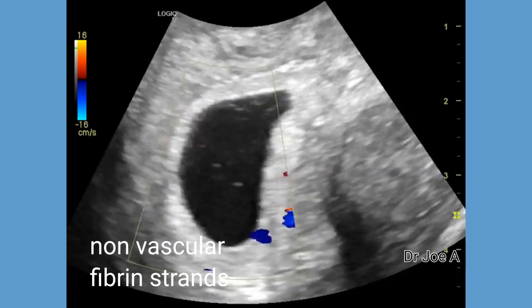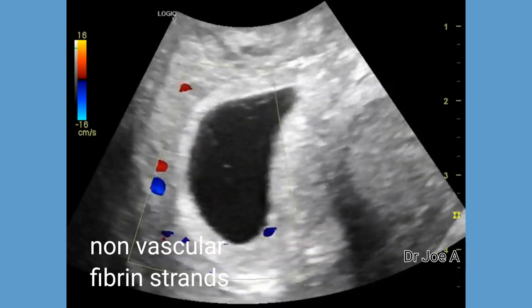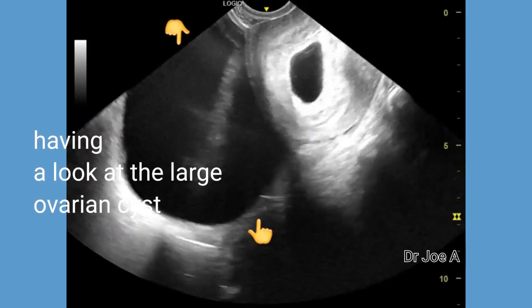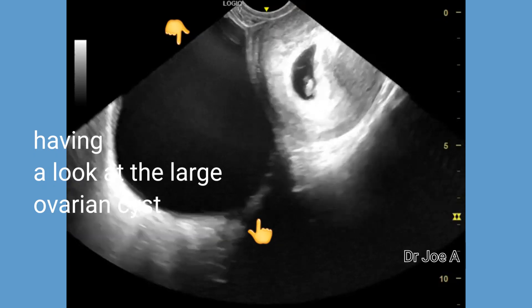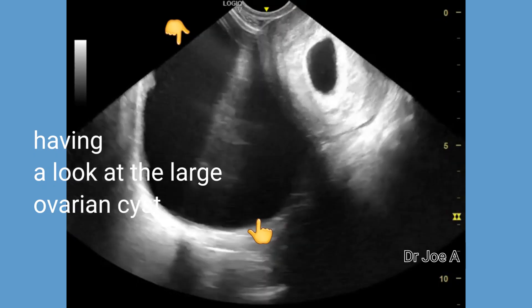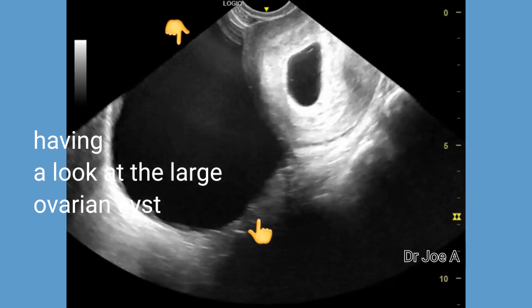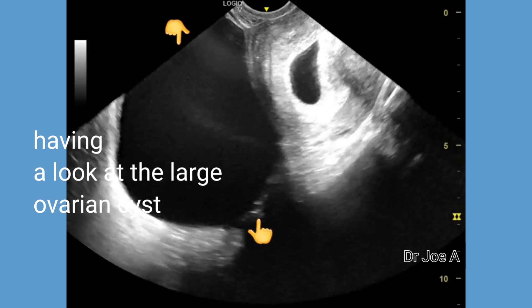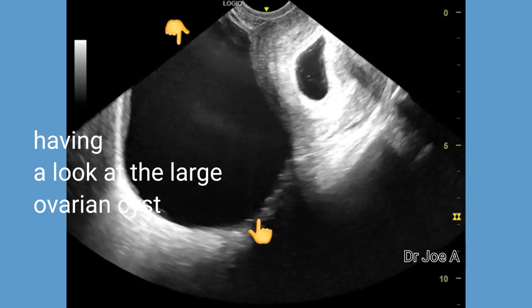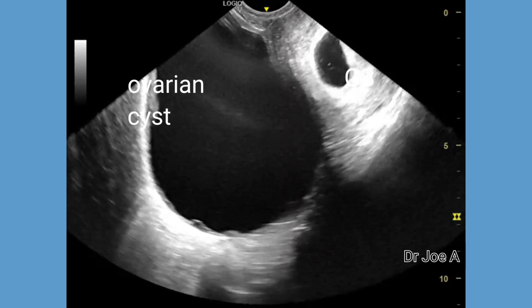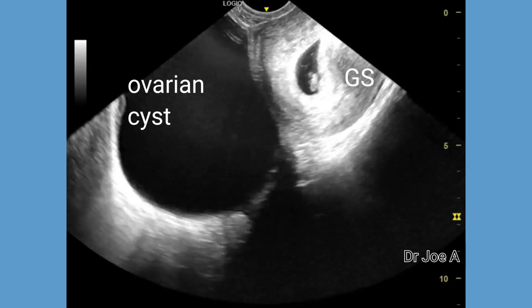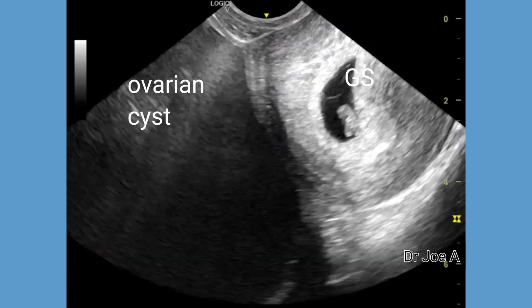Some of the other causes of such an appearance within the gestational sac include subchorionic hemorrhage, which can also produce small strand-like material within the gestational sac. In some cases, the residual lining of the uterus may lead to the formation of fibrin strands within the gestational sac. Sometimes a miscarriage can begin but not complete, also leading to the formation of fibrin strands. Other signs of an incomplete miscarriage may include bleeding and cramping.